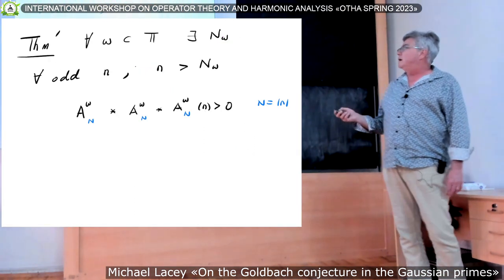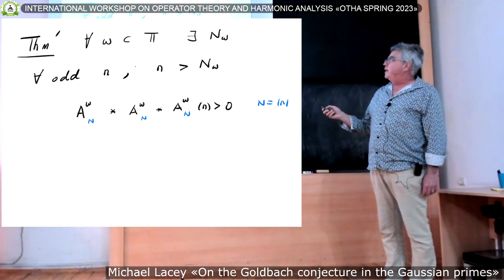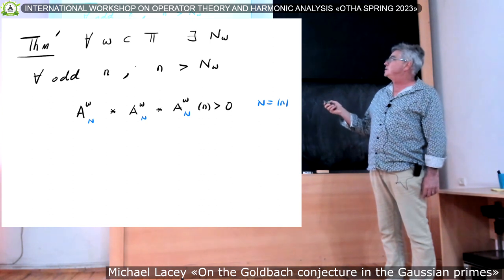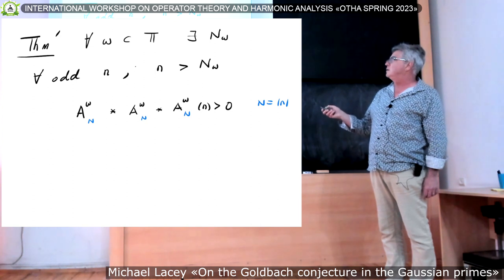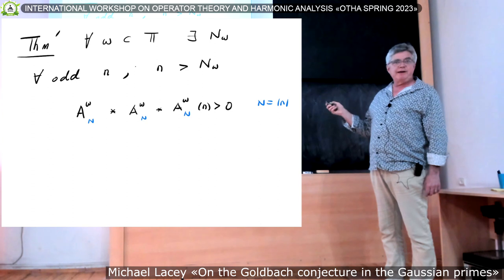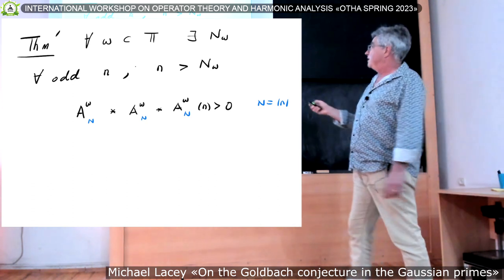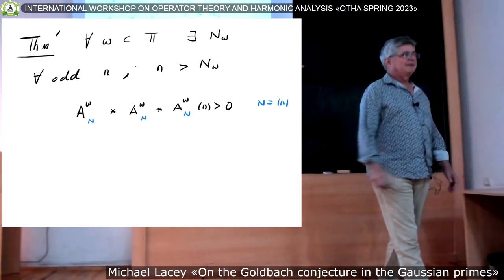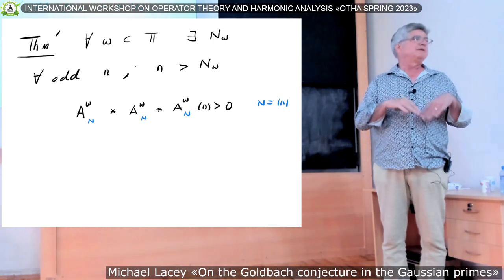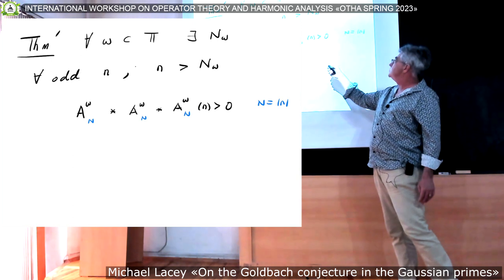And so in this, just to restate the theorem, for any arc in the circle, there is a sufficiently large integer. So that for all odd integers larger, and I should have modulus here, all odd Gaussian integers whose modulus is bigger than this integer. If I set n capital N to be the modulus, and I convolve my average with itself three times, and I evaluate it at n, I get a positive number. So the von Mangoldt function is more or less only positive on primes. So if this triple average is positive, that means I had to have a prime here, a prime here, a prime here, whose sum was that number.